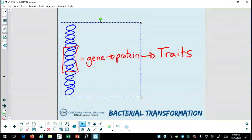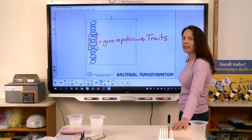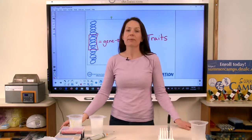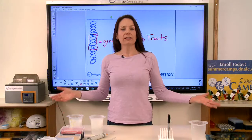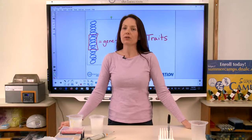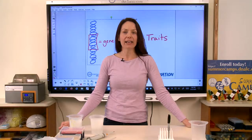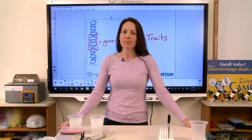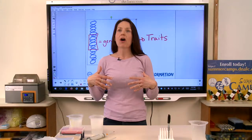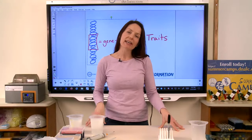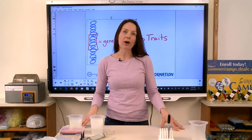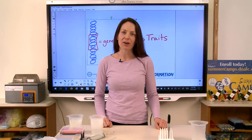Has everybody heard of a trait before? You can also use the word characteristic if you're more comfortable with that. Let's consider different traits that humans can have or maybe even other organisms. A lot of times when I ask students to give me examples of traits, some of the first traits that people volunteer tend to be things like hair color or eye color or height. Those are all fabulous examples. You can also consider how traits are influencing how our bodies work, such as how we digest foods or even how other molecules interact together within our body.